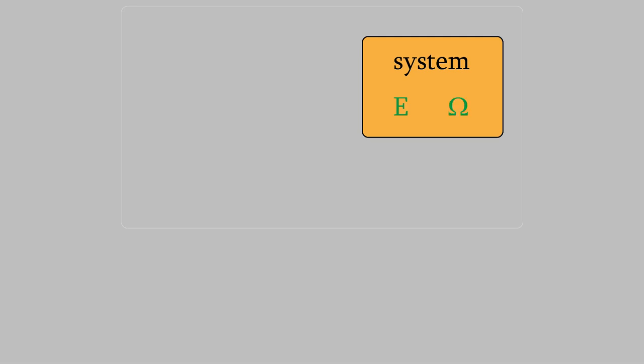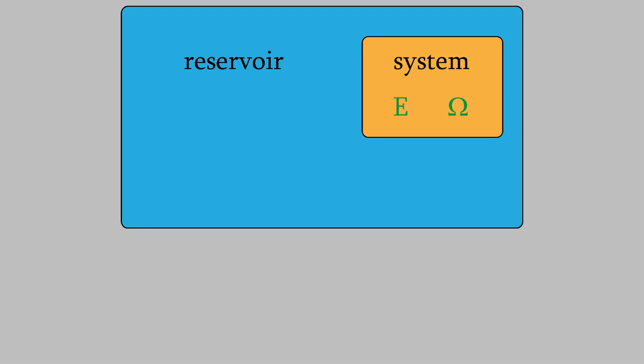Outside of the system is what we'll call the reservoir. The reservoir is a portion of the environment that the system can interact with. The part of the environment beyond the reservoir is too far away from the system for the system to interact with it. This way, we don't have to think about the entire environment, which consists of the whole universe, when we think about how the system and environment interact. The energy of the reservoir is called E-R, and the number of microstates the reservoir can have is omega-R. Also, the total energy is called E-sub-T, and the total number of possible microstates is omega-T.